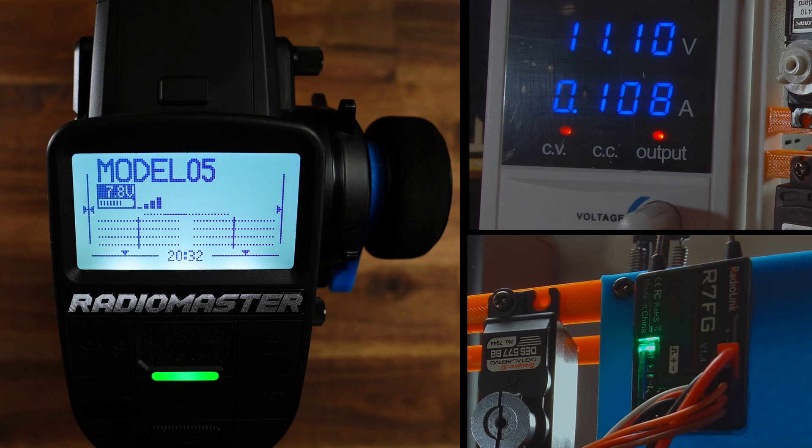Here we have an ESC, the BEC of this ESC provides 7.4 volts. And here we have the receiver. This is a Radiolink R7FG and this is a separate voltage input, a voltage sensor input.